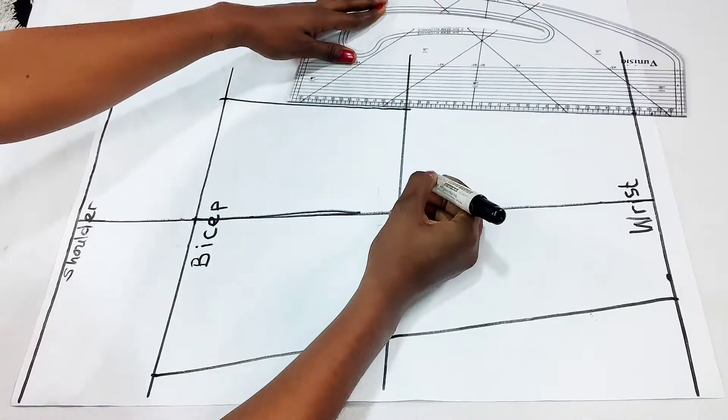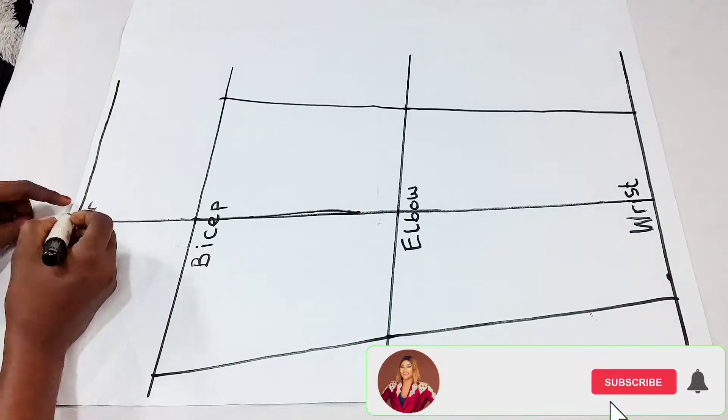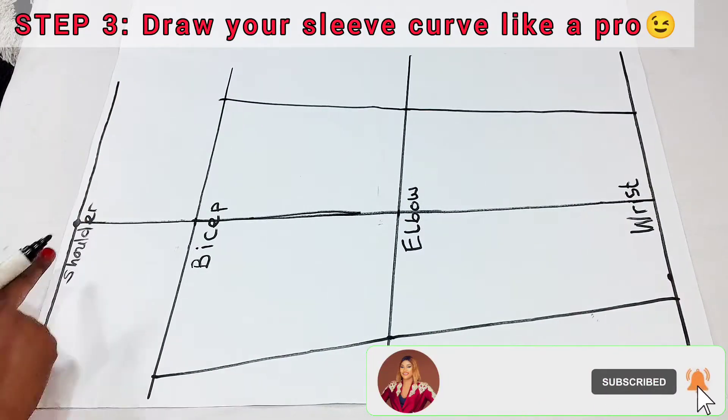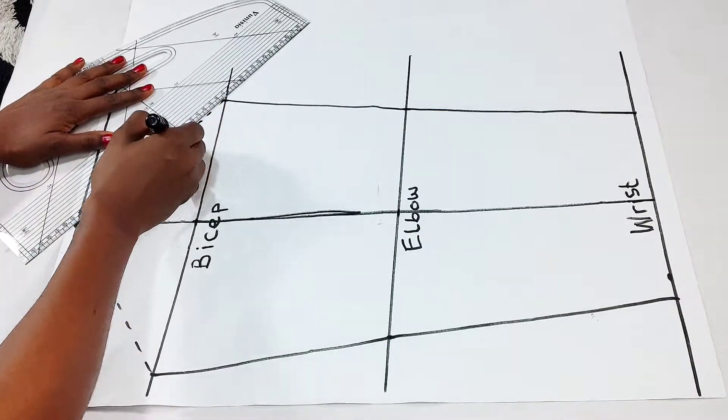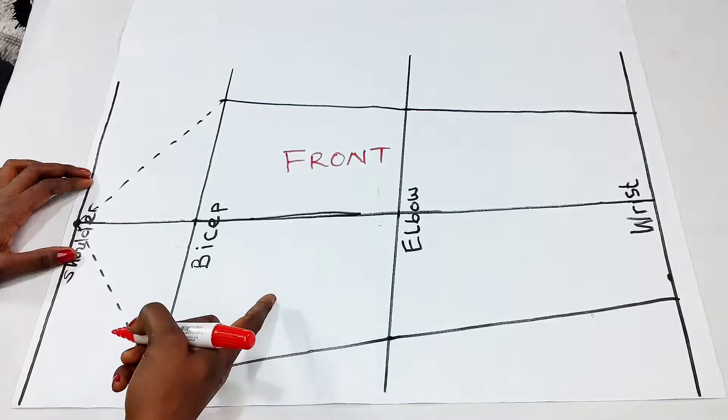We connect where the center line meets with the shoulder line with the two edges of our bicep. Then I just go to indicate where the front and the back is.